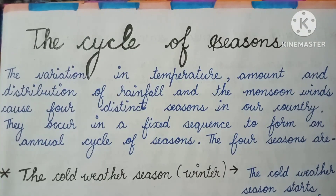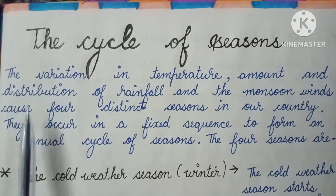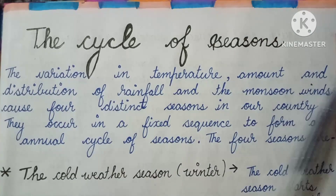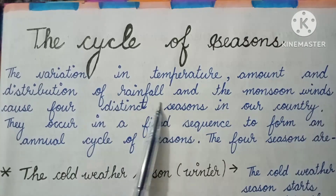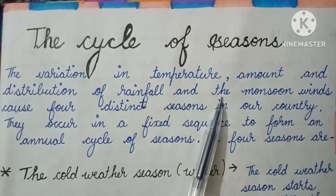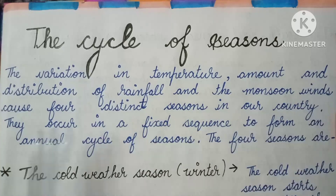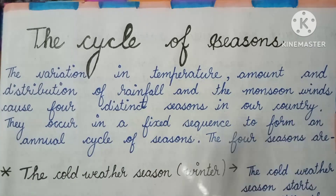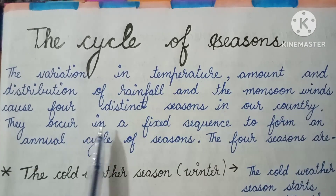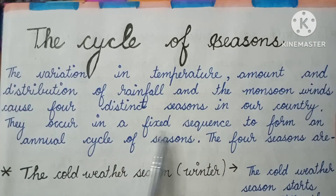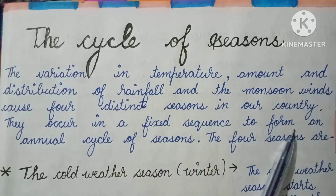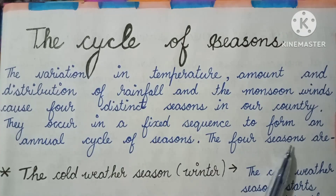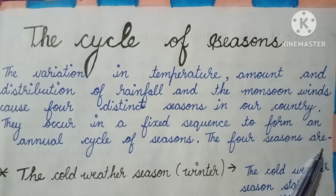Now, the cycle of seasons. The variation in temperature, amount and distribution of rainfall, and the monsoon winds cause four distinct seasons in our country. They occur in a set sequence to form an annual cycle of seasons.